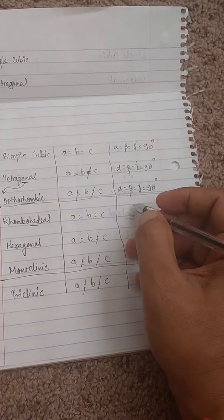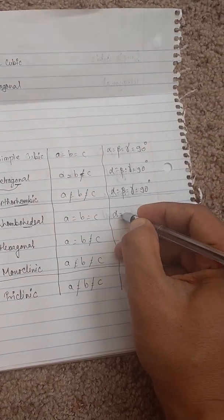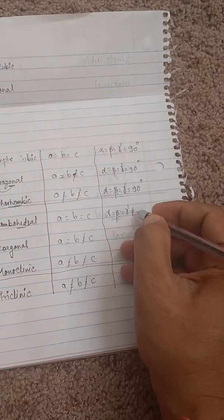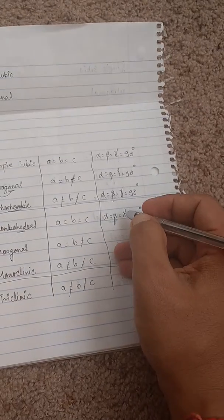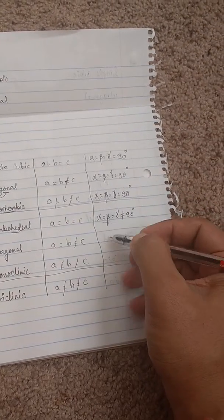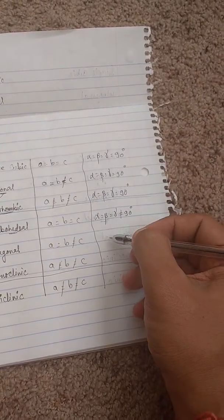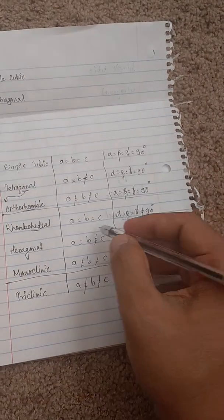Rhombohedral is easy, only one is right: alpha equals beta equals gamma, not equals to 90 degrees. The trick here is distinguishing rhombohedral from hexagonal.